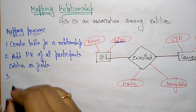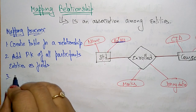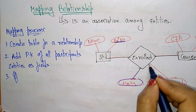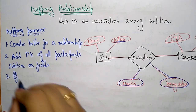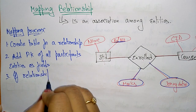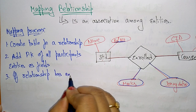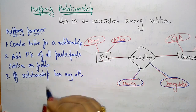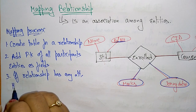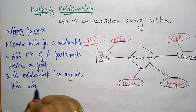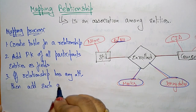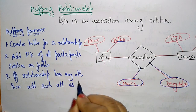Third point: if the relationship has any attributes — here the relationship 'enrolled' has attributes — then add each attribute as a field of the table.